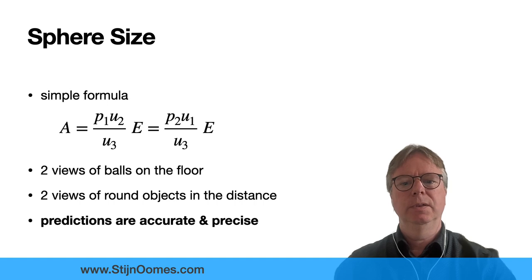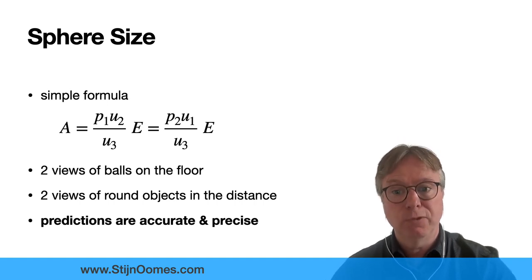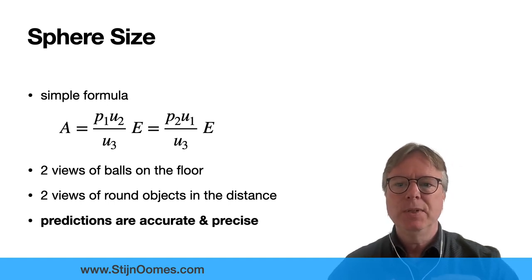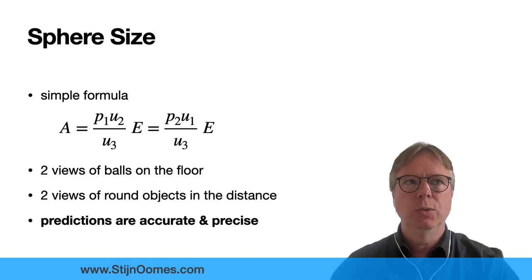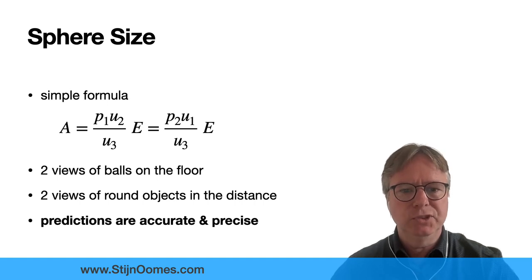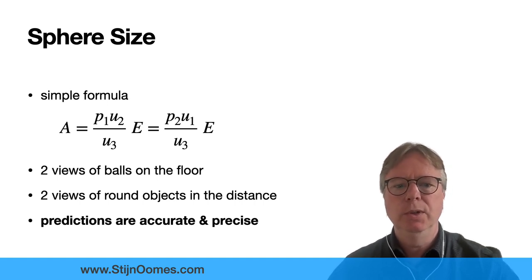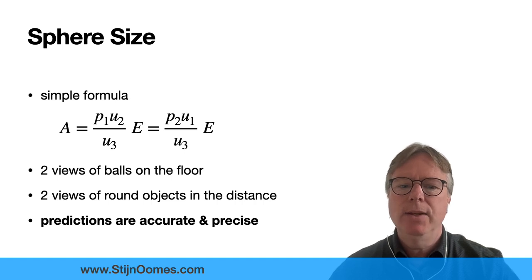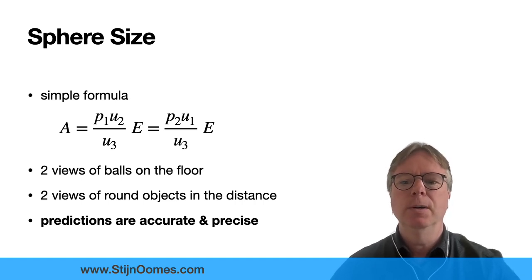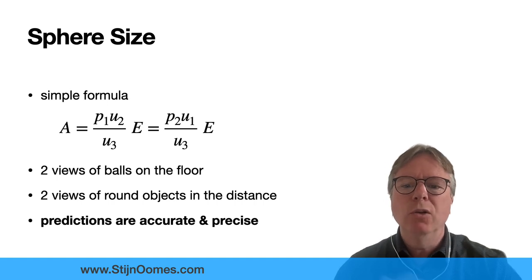So what do we have? I've derived for you a rather simple formula for the radius of a sphere from two views. What is really nice, and I'm getting that more often, is that I get two expressions, which means I do two measurements with one setup. That's why I can also calculate precisions, standard deviations. So we not only have the difference between real measurements but also the precision of our measurements. I've shown you the case of two views and stereo pictures of balls on the floor here in my office and two round objects in the distance.